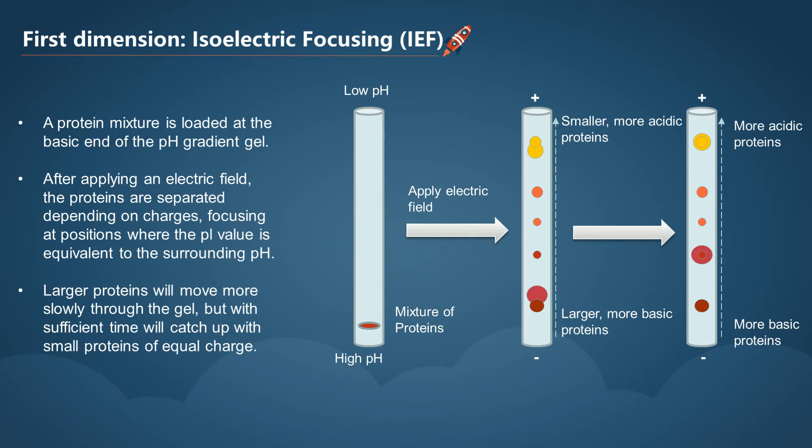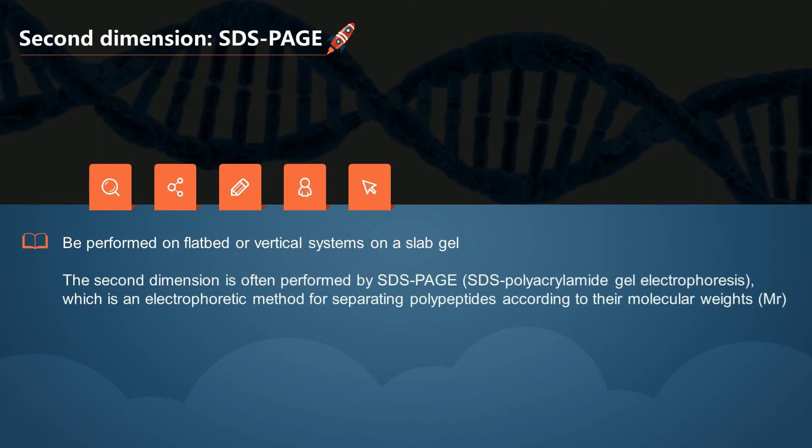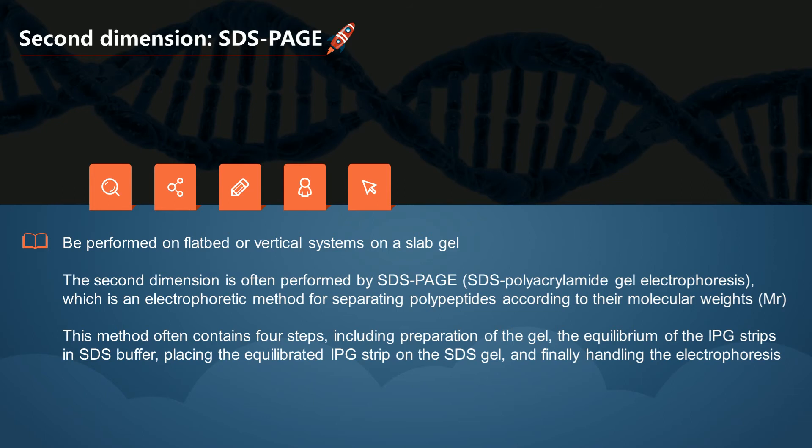After the first dimension, the second dimension separation can be performed on flatbed or vertical systems on a slab gel. The second dimension is often performed by SDS-PAGE, which is an electrophoretic method for separating polypeptides according to their molecular weights. This method often contains four steps, including preparation of the gel, the equilibration of the immobilized pH gradient strips in SDS buffer, placing the equilibrated immobilized pH gradient strip on the SDS gel, and finally handling the electrophoresis.